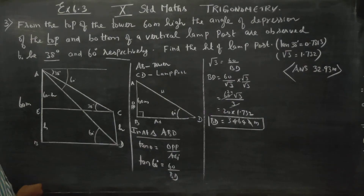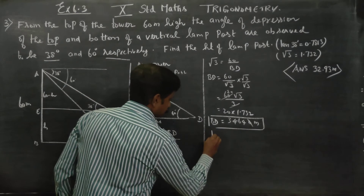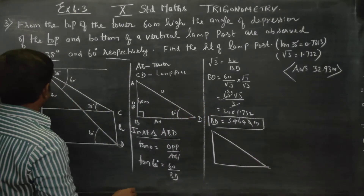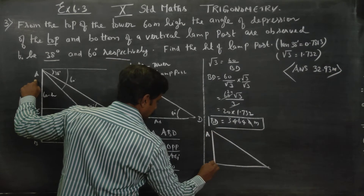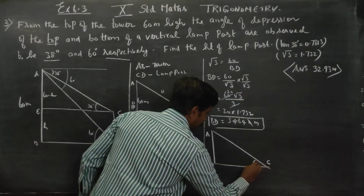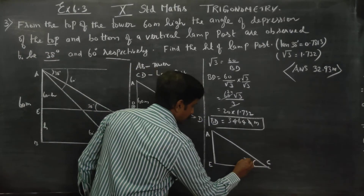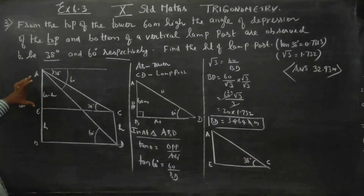Now for the smaller triangle AEC. In triangle AEC, the angle is 38 degrees. EC equals BD equals 34.64. The opposite side is 60 minus H and the adjacent side is EC which equals 34.64.